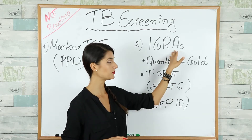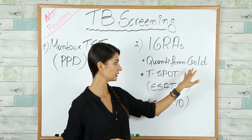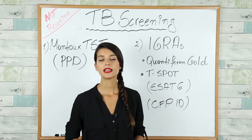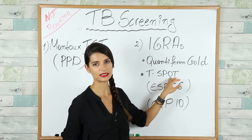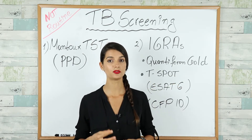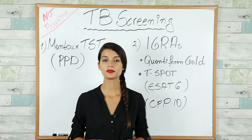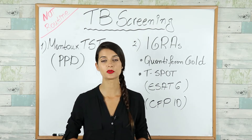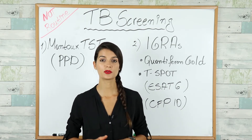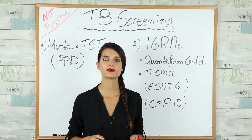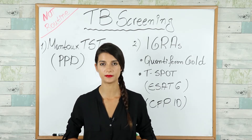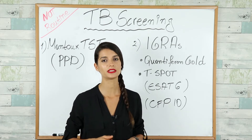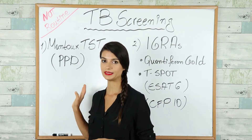There are two FDA-approved IGRA tests. The QuantiFERON-Gold test gives a positive or negative result based on numbers, and the T-SPOT test requires counting dots. The advantages of blood tests over the skin test include: results within 24 hours, no false positives in patients who received the BCG vaccine, and they are preferred when patients are not expected to return to the clinic to have the PPD results read.